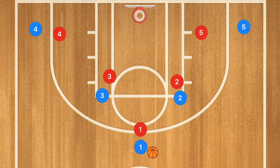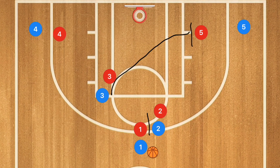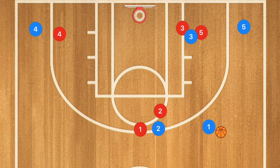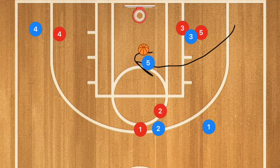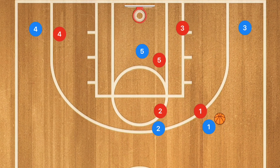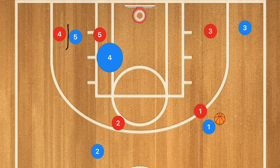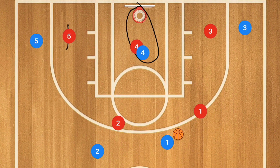This next play only works against man-to-man defense. In this horns offense, player two sets a screen for player one, and player three cuts down to set a back screen on player five. Player one uses that screen — option for a three-point shot — or we look for player five cutting across the key for a layup. If player five's not open, player three pops out, player two pops out, and player five cuts across to set a back screen for player four — who may be open for an easy layup.